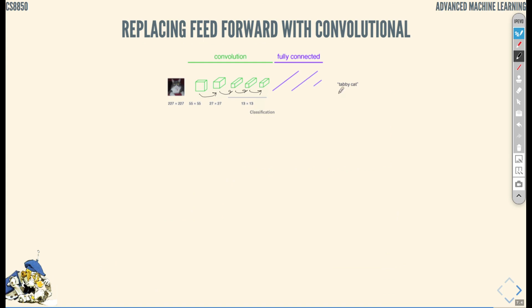And it all culminates with fully connected, or so-called feed-forward neural network, that then makes a prediction from k classes. Can we do the same without fully connected layers?